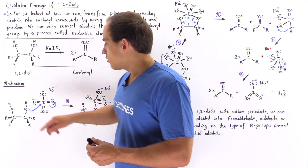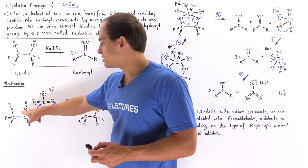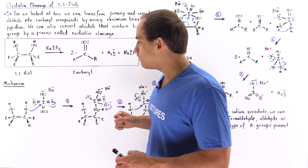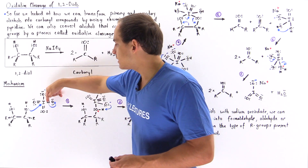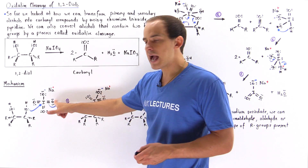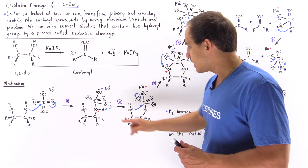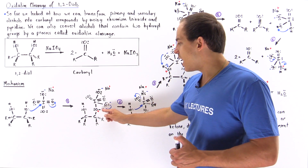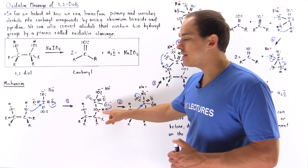In step one, one of the hydroxyl groups uses the lone pairs on its oxygen to form a covalent bond between the oxygen and the iodide, displacing one of the pi bonds and placing those two electrons onto the oxygen. We form an intermediate with a negative charge on one oxygen and a positive charge on the adjacent oxygen that contains an H atom.